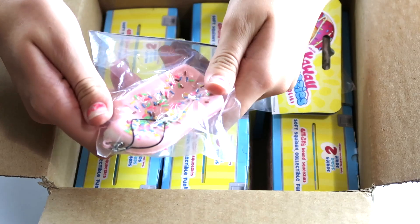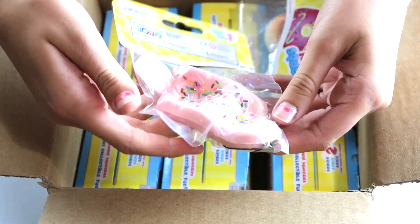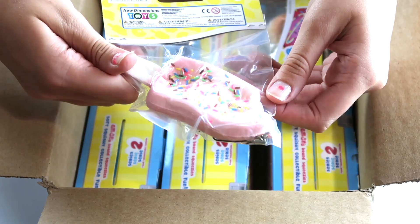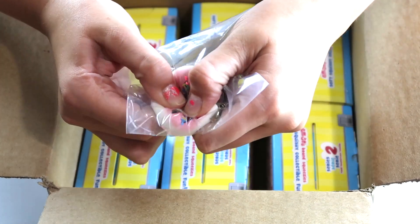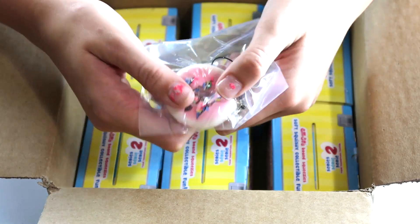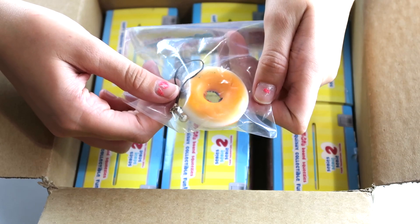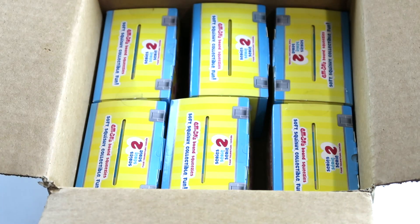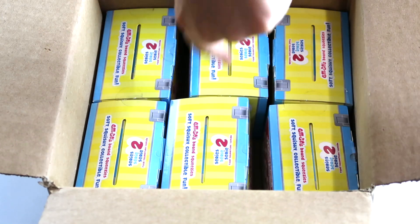Next is a popsicle, which is way more super slow rising than the ones that you can get at Michael's. The last one is this donut that is pink and has sprinkles. Super cute. So that was all of series one. And next we're going to show you series two. And we have six of the series two.